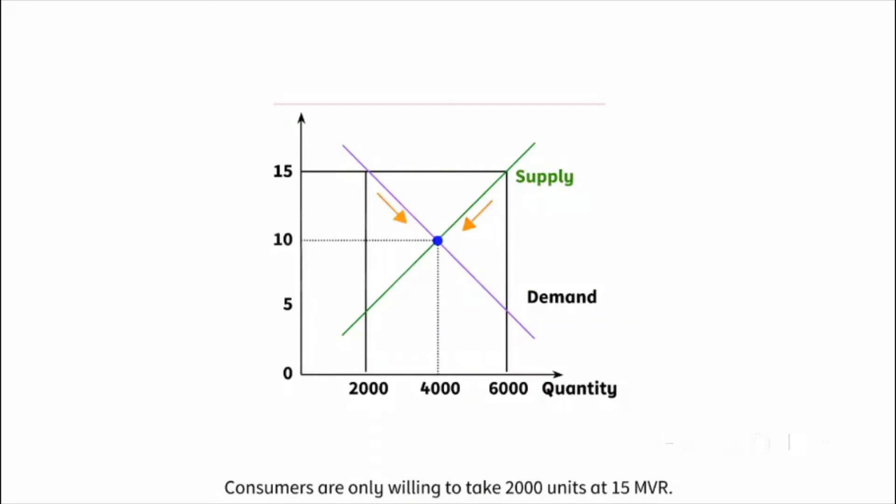Consumers, however, are only willing to buy 2,000 units at 15 MVR. This causes an excess supply of 4,000 units of products.